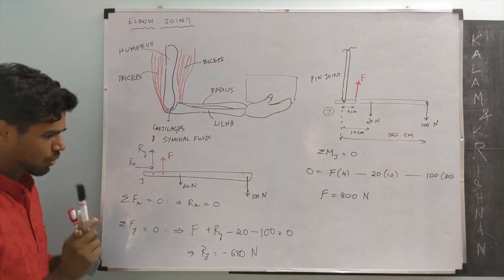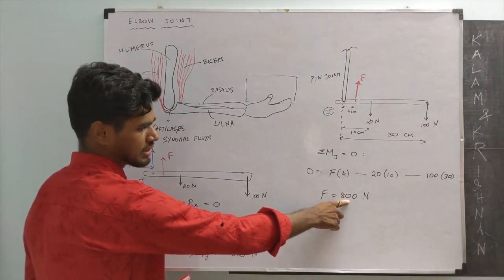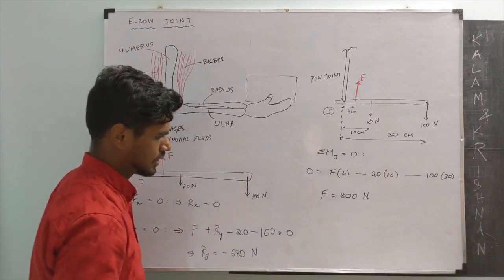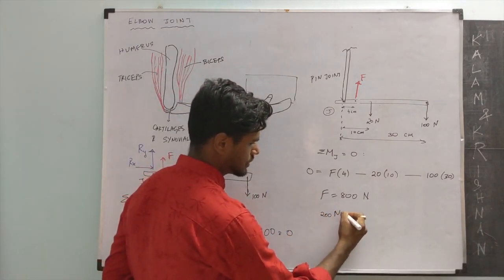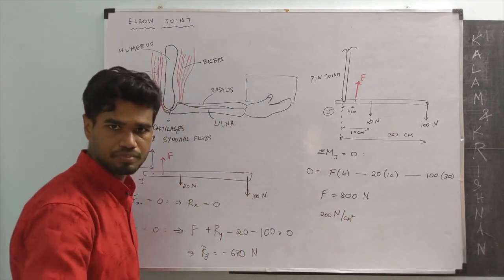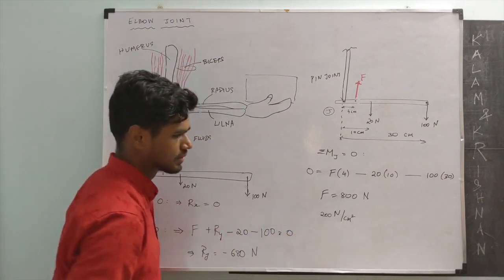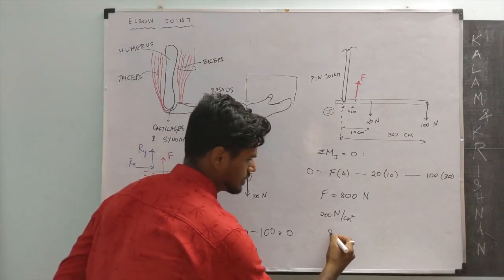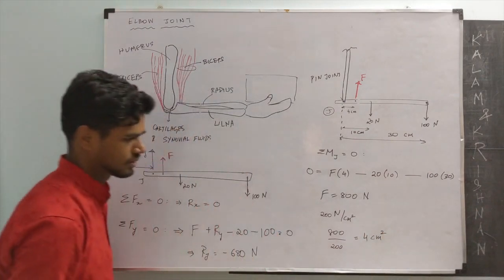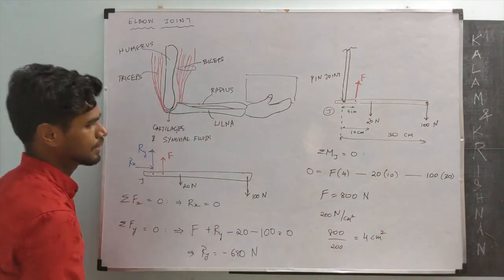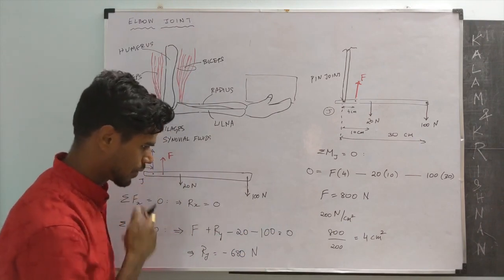There is one more question we can answer about the elbow joint. We notice the biceps in this case was exerting a force of 800 Newtons. Let us say the muscle, the bicep muscle exerts 200 Newtons per centimeter square of muscle area. What is the area of the muscle required to exert this force 800 Newtons? It is a simple question. 800 over 200 should be 4 centimeter square should be the amount of muscular area that should be required to exert this force if a unit area exerts 200 Newtons.